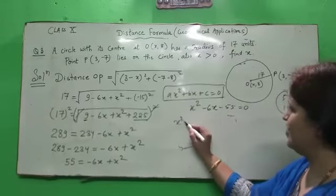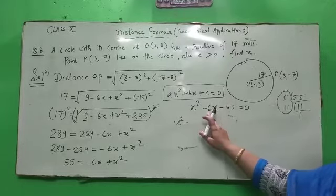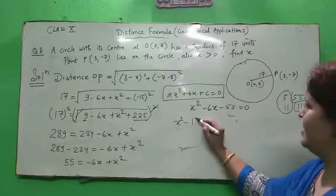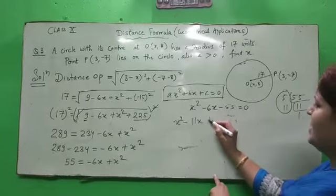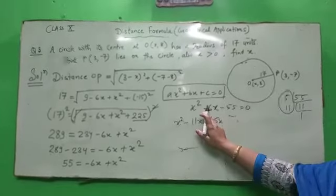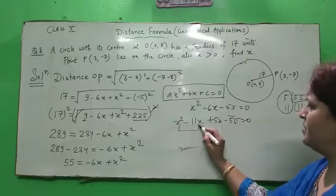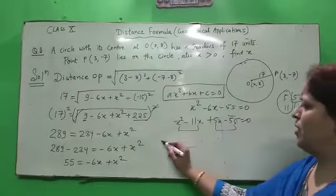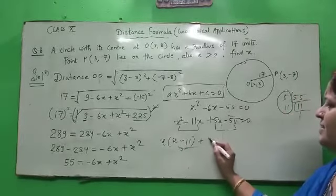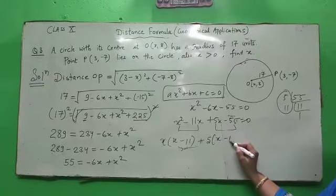We need to find two factors of 55 which when added give minus 6 and when multiplied give 55. So let's do prime factors, 5, 11. So we will get a unique set of prime factors, 5 and 11. So write it properly, X square minus, because negative number should be larger, because we need minus 6. So we can write minus 11X plus 5X, minus 55 is equal to 0. We will take common from these two terms.